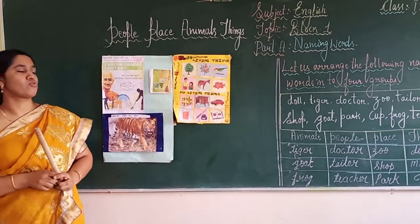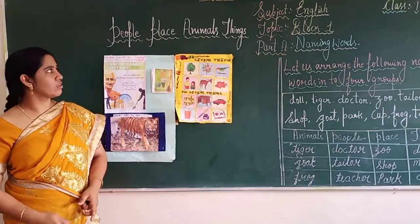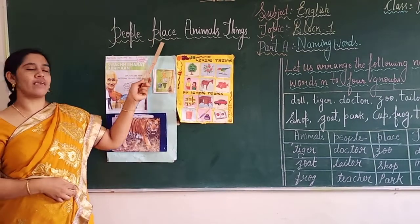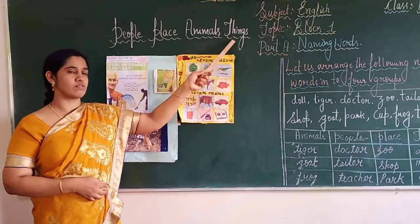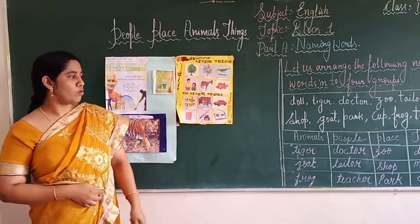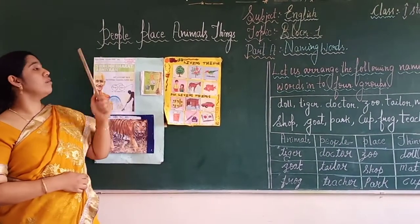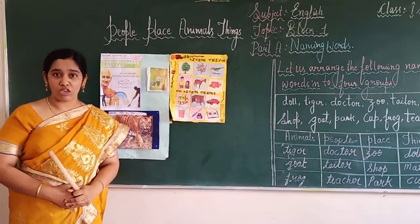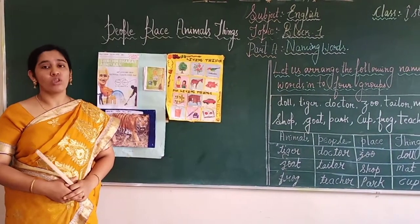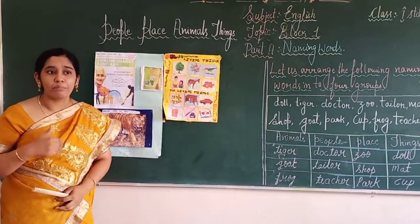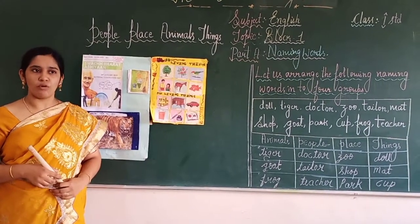We have to divide these words into four groups: people, places, animals, and things. Look at the word. What is the meaning of people? People are living things — those who can talk, those who can breathe, those who can walk. All come under this group.